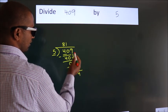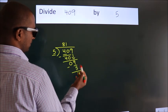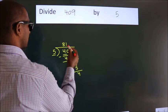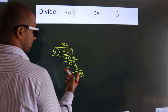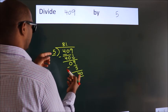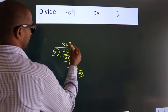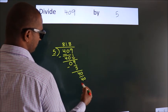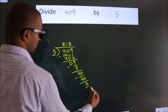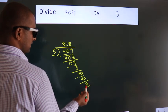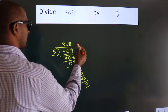After this, no more numbers to bring down, so what we do is we put a dot and take 0, so 40. When do we get 40 in the 5 table? 5 eights, 40. Now we subtract. We get 0. We got remainder 0, so this is our quotient.